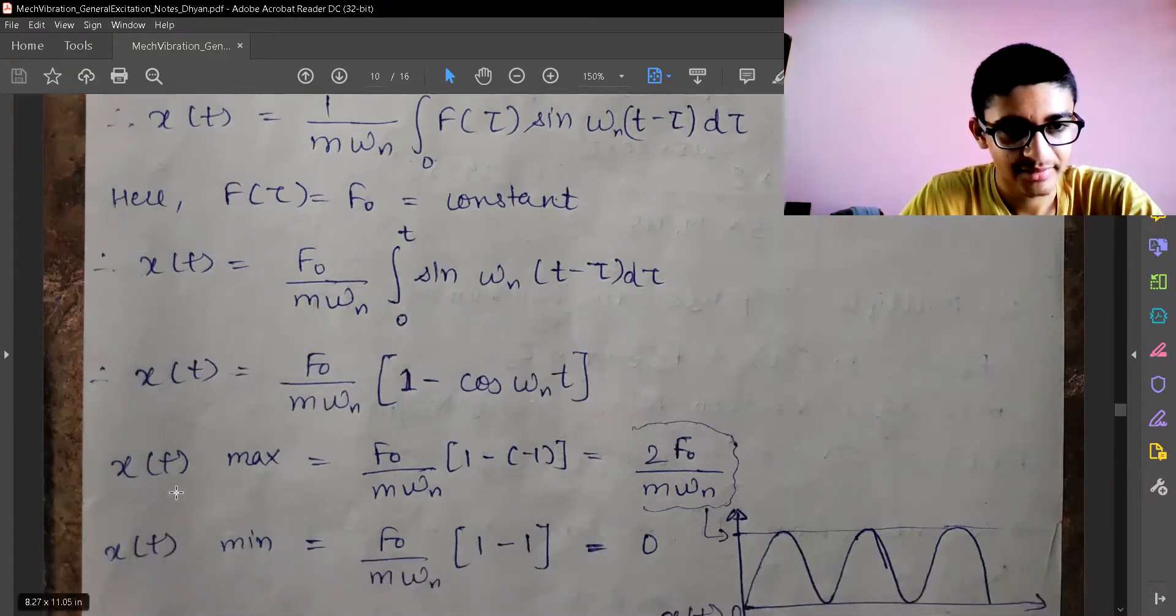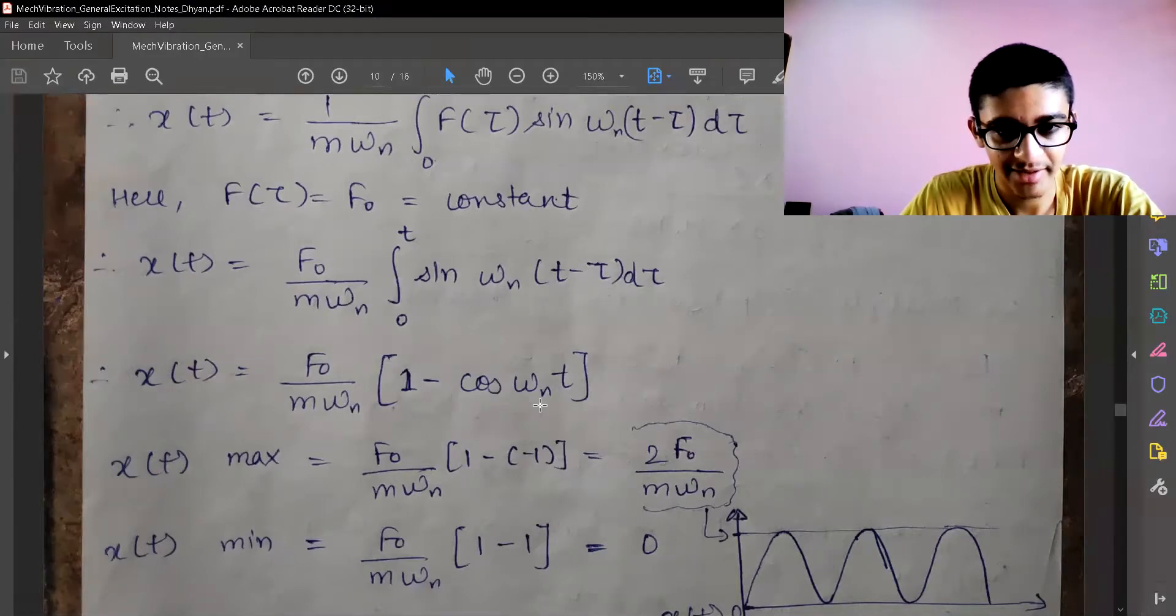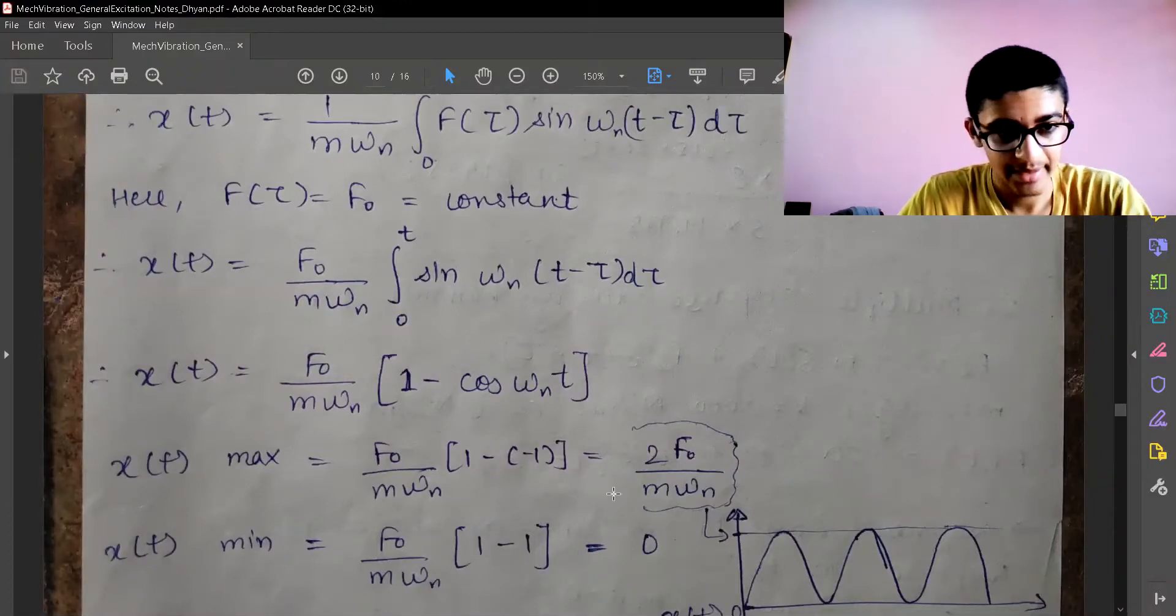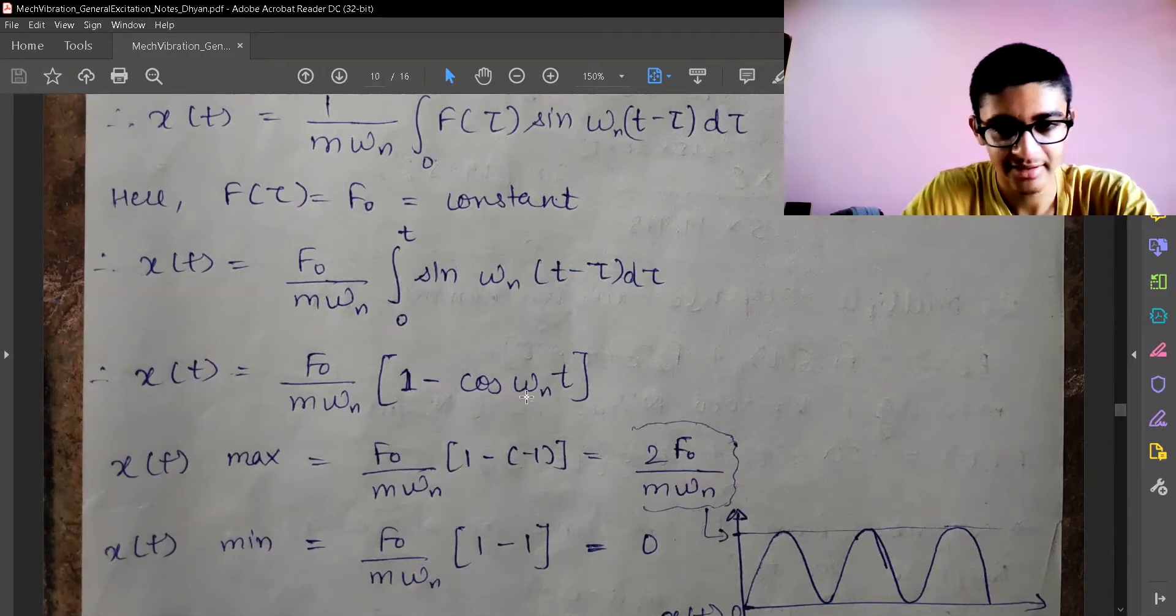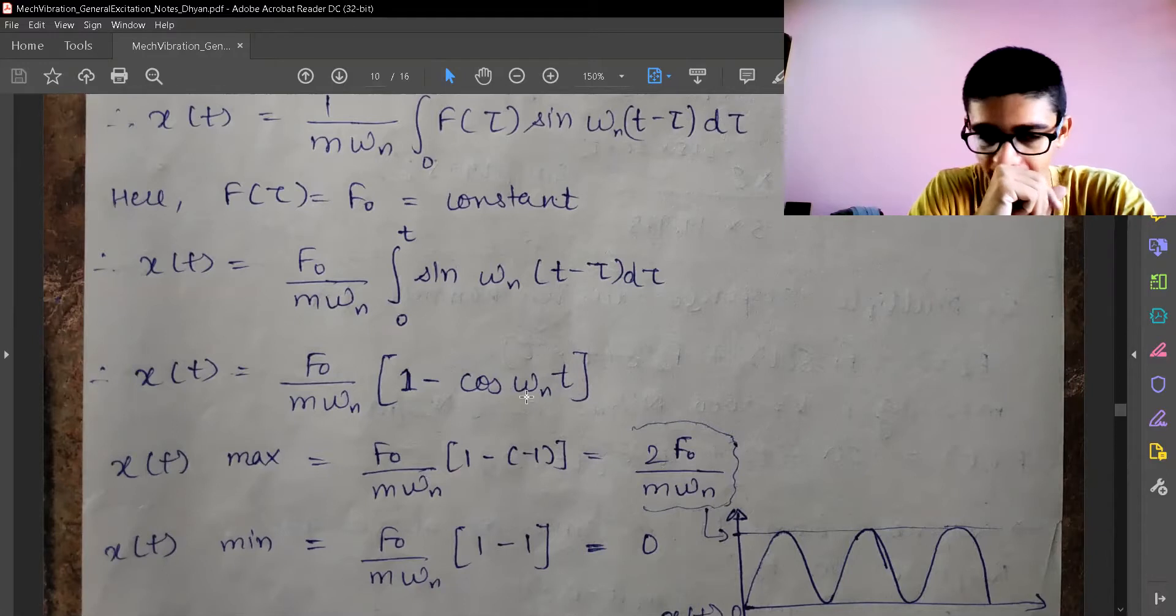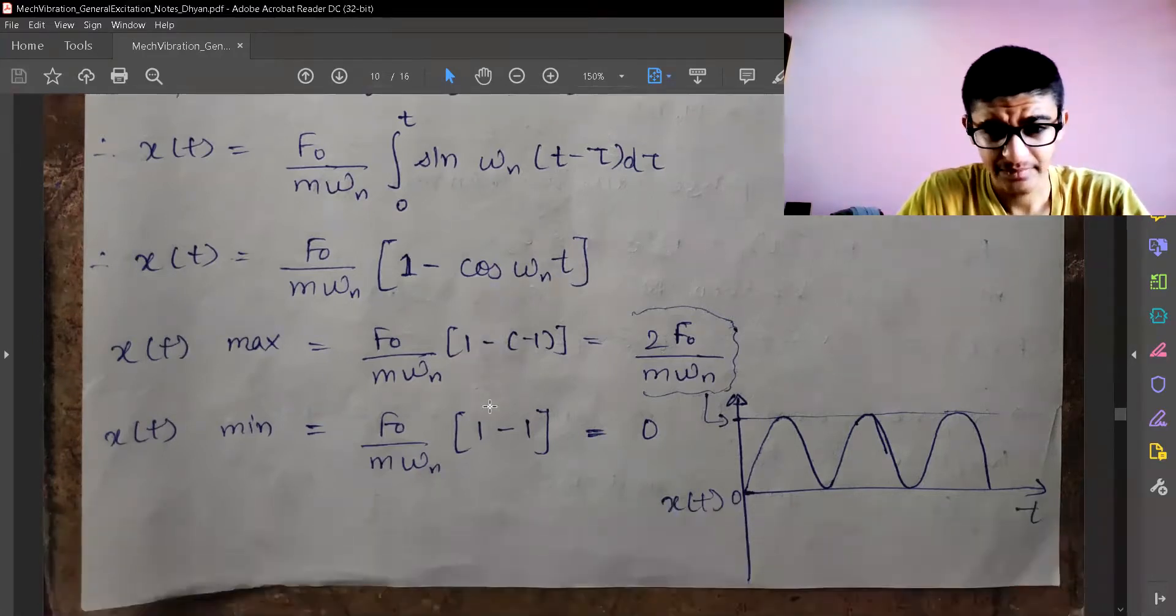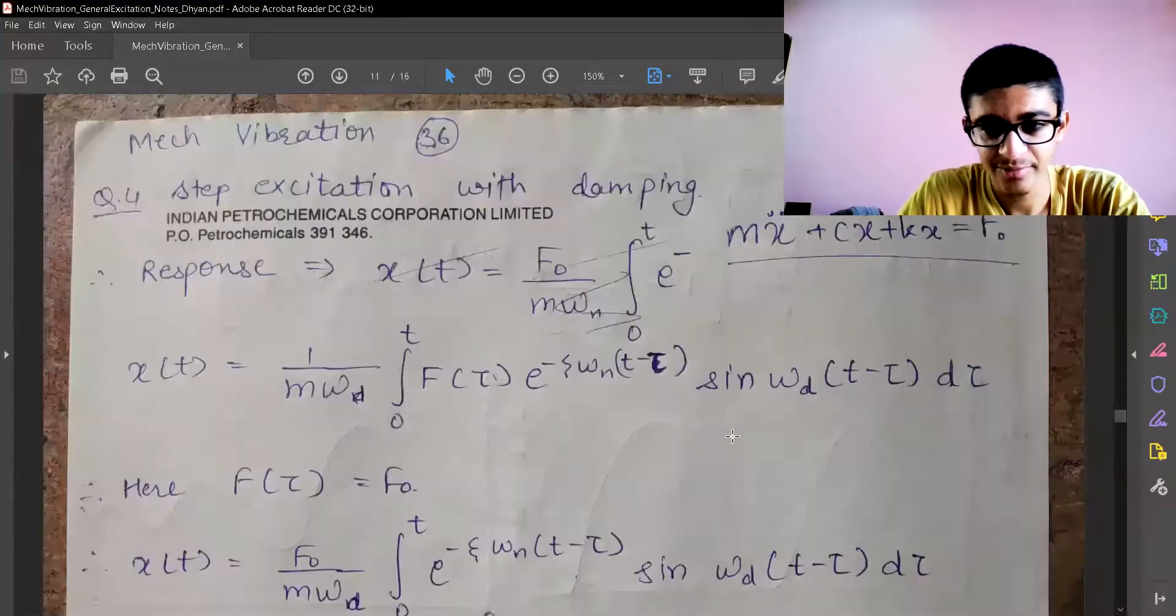The maximum value of xp will be when cos(omega_n*t) is equal to minus one, and we'll have the value of 2F₀/(m*omega_n). The minimum value will be when cos(omega_n*t) equals zero, so we have the value zero. This is how the response looks like.